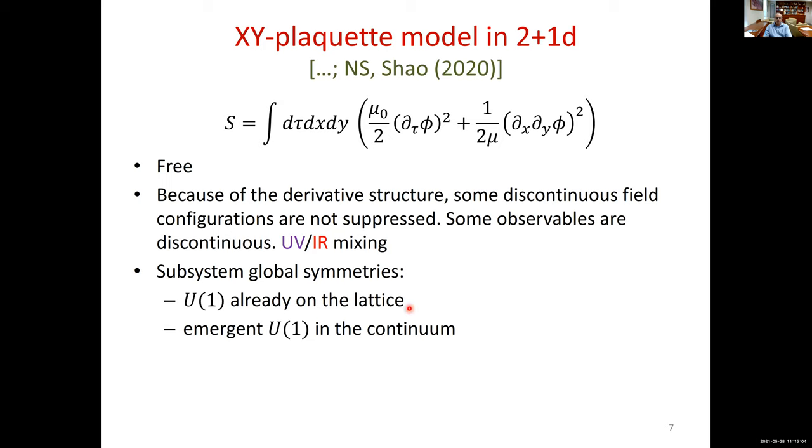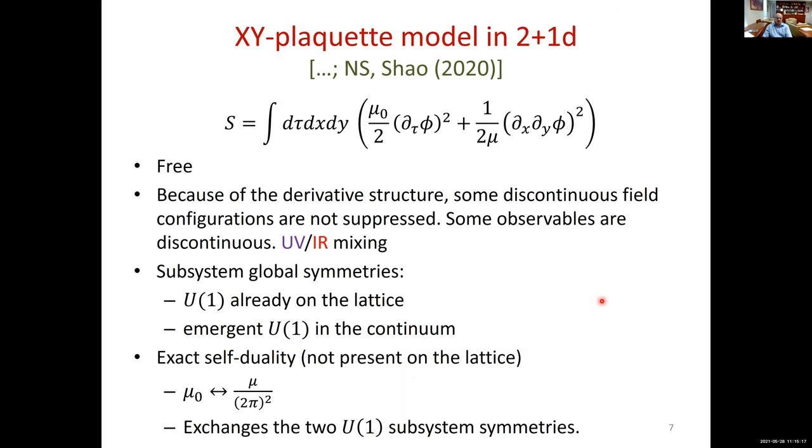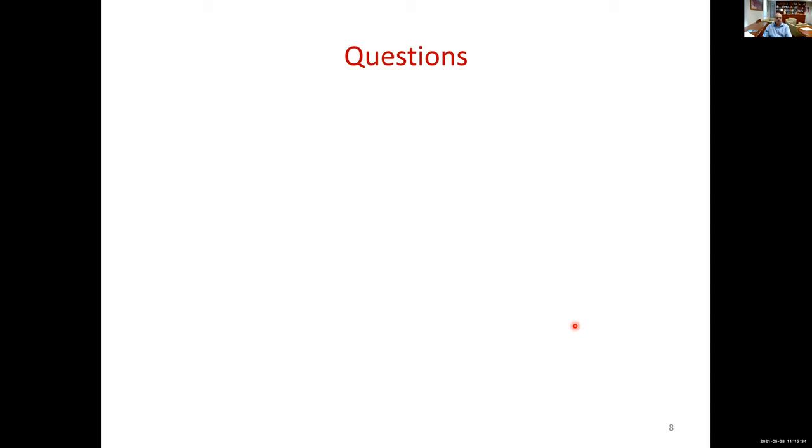The second important point about this system is that it has subsystem symmetry. I already mentioned one of them which was present already on the lattice, but in the continuum theory there's also a second emerging U(1) symmetry which will be discussed in the coming talks. And finally, there's an exact self-duality exchanging mu and mu zero, and this exact duality exchanges the two U(1) symmetries. This again is present only in the continuum and not on the lattice. For one thing, this symmetry is not present on the lattice, and this system is on the lattice. So this raised many interesting questions.